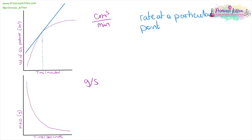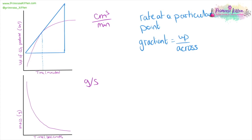The tangent should only touch the curve at the point you're interested in. Then you work out the gradient of that line by drawing a triangle — the bigger the triangle the better — and calculating the change in y divided by the change in x, taking your units from the graph. You can compare rates at different points: at the start the tangent is very steep, whereas later on in the reaction the tangent is very shallow, showing different rates at different points.